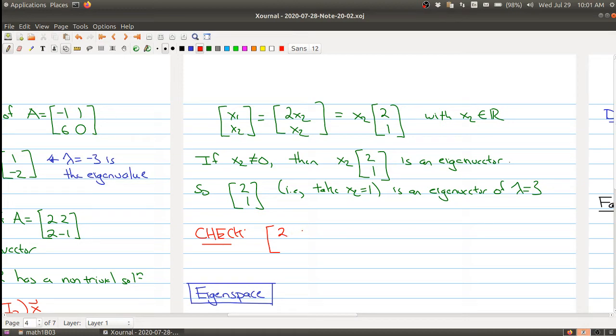So all you do is take your original matrix [2, 2; 2, -1] and you multiply it by what you think is the eigenvector, and you multiply it out.